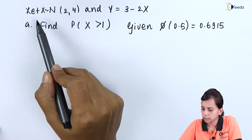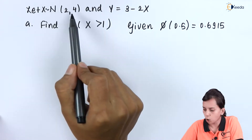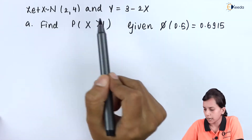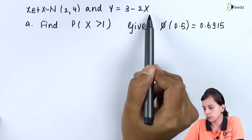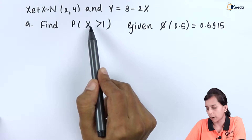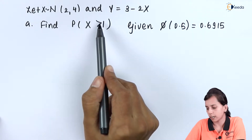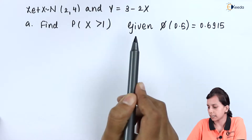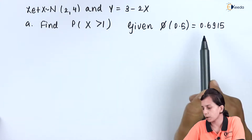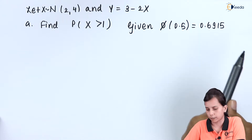Let us look at the question first, then we will proceed towards the solution. Let capital X belong to N(2,4) and Y equals 3 minus 2X. Find the probability such that capital X random variable takes a value greater than 1, given that φ(0.5) equals 0.6915.